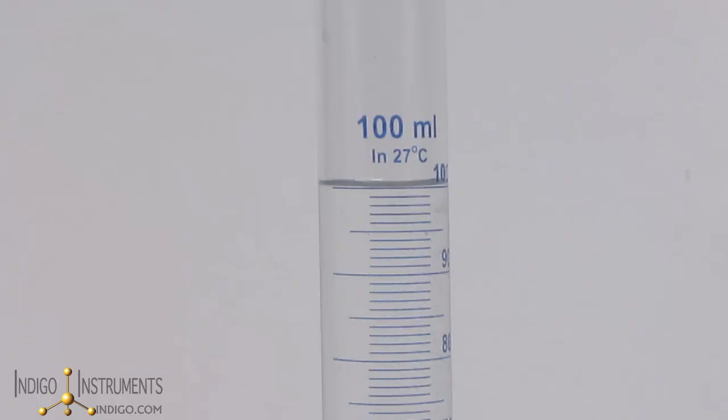Where you fill a graduated cylinder will determine how accurate the measurement is. The specification of 1% is met at the full level of filling, in this case 100 milliliters.